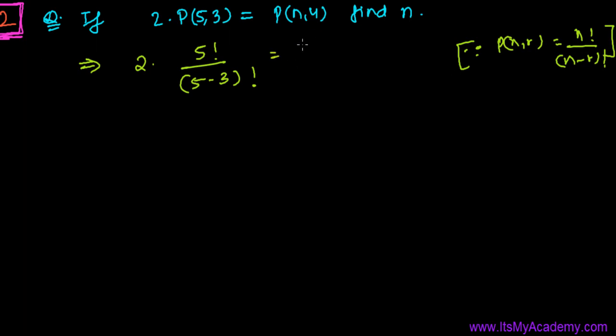And equals to n factorial divided by n minus 4 factorial. Let's further proceed. It's 2 times, 5 minus 3, that's 2 factorial. 2 factorial is 2 times 1. We can cancel with these 2 also.